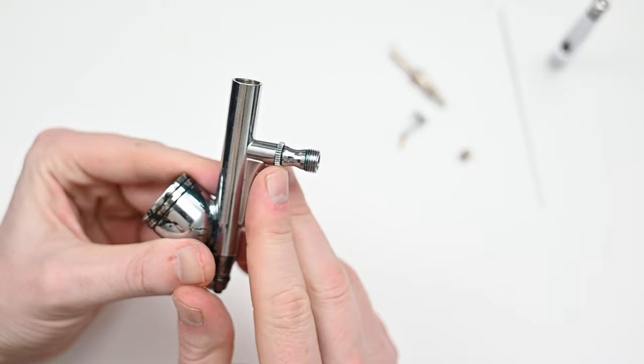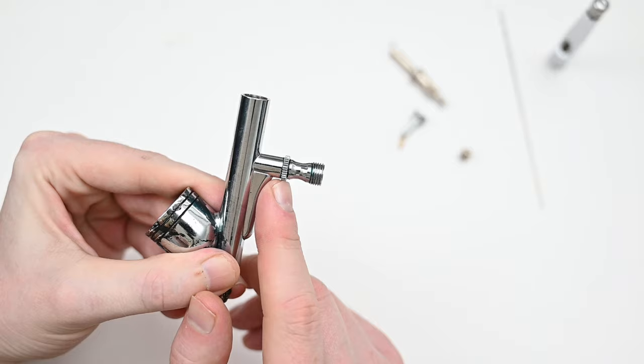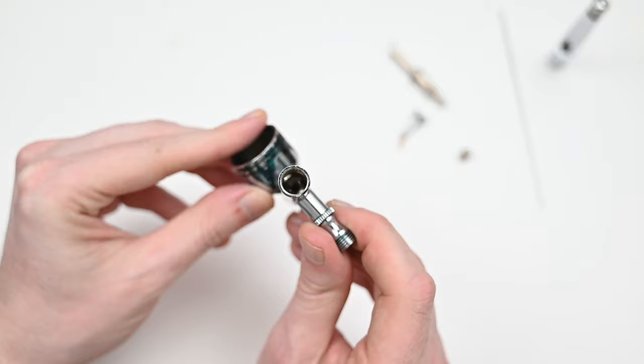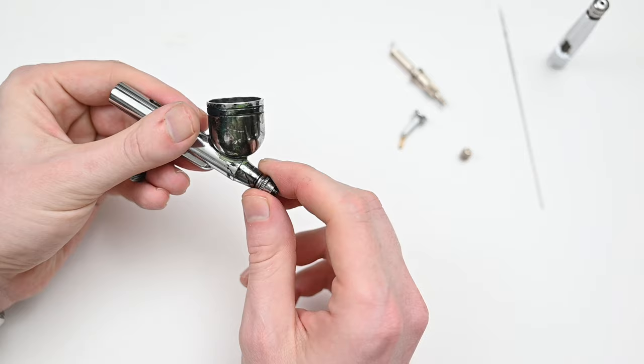At the bottom of the airbrush, you have this air assembly. There's no need to break this down. Inside here, there's a spring and a small piston. And of course, within the body of the airbrush in here is the needle packing screw, and this prevents any paint from leaking back into the body of the airbrush. And on the front of the airbrush, I could unscrew this air cap, which gives us access to the nozzle.